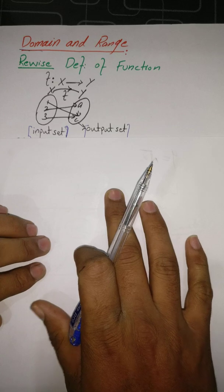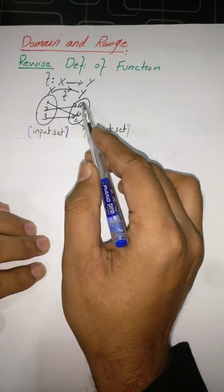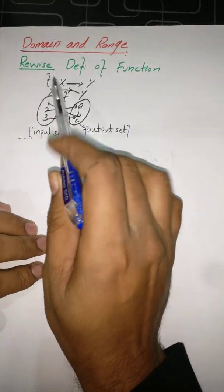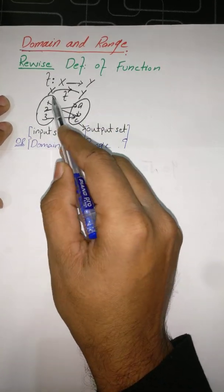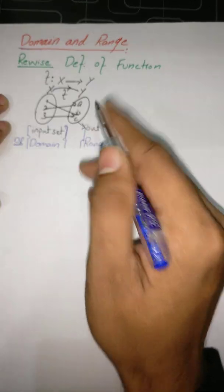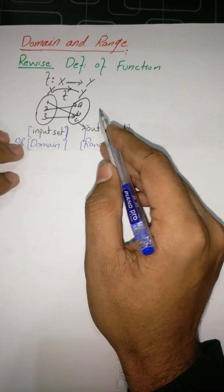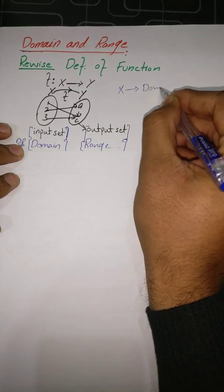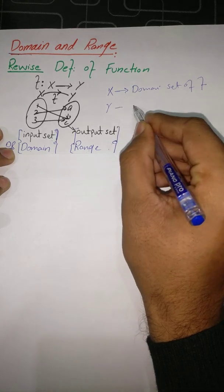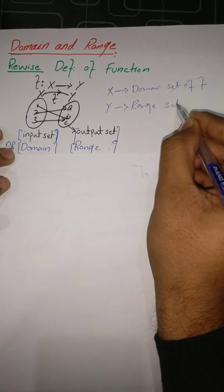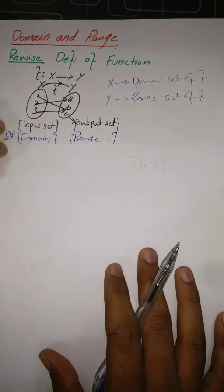Dear students, set X is also called the input set and set Y is also called the output set. When we study domain and range of the function, the input value set is our domain of function f, and the output set Y is the range of function f. So X is the domain of f and Y is the range of f.